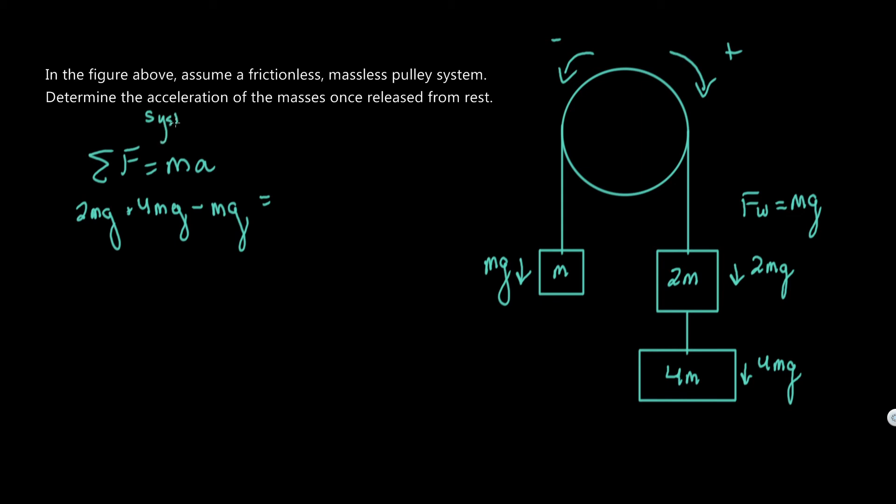The force of the system, mass of the system, acceleration of the system—all these blocks will accelerate the same. What's the total mass? Easy. You just add up all the masses: 1 plus 2 plus 4 is 7, so we got 7m. And then acceleration is what we're trying to find.